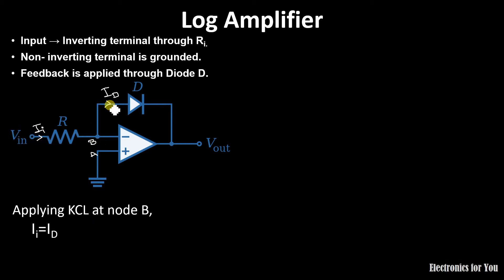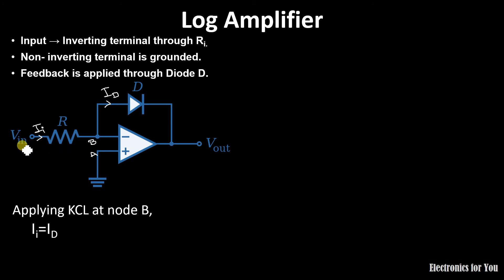By applying KCL at this node, the sum of incoming currents equals the sum of outgoing currents, therefore I_i equals I_d. Now I_i can be calculated using the formula: V_in minus V_b divided by resistance R. However, I_d is the diode current and you cannot use a simple potential difference formula for it.